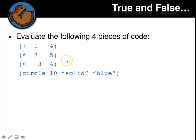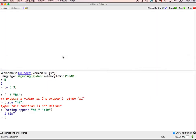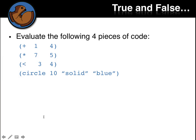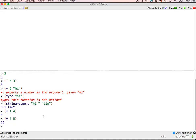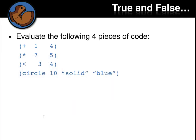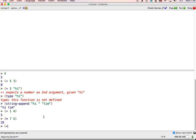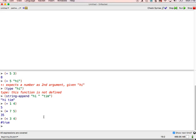Now we're going to look at a new... Let's look at these four pieces of code. So plus one, four. And with that, the domain is numbers because this takes in two numbers. And I'm saying the range is also going to be a number. It's going to give us a number. Yep. So five is a number. Times seven, five. Also a number. Less than three, four. What do we think that's going to be? Not a number.